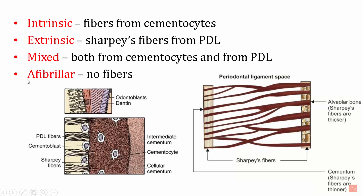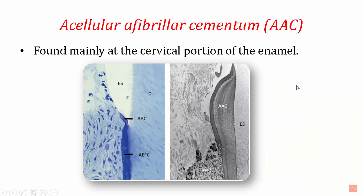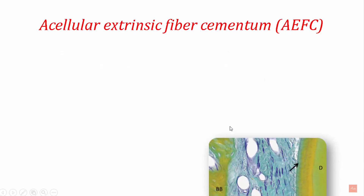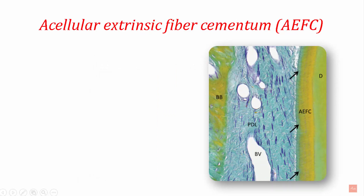The first type is acellular afibrillar cementum — no cells and no fibers. This type is found mainly in the cervical portion overlying the enamel surface, marginally overlapping the enamel near the CEJ. In the magnified image, you can see a lamellar pattern of deposition, with lines representing rest periods that are more calcified than the rest of the cementum.